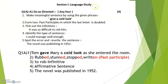As you can see here, section 1 language study. The first set of questions is any 4, and each carries 1 mark. There are 5 questions so you need to do any 4. First is: make a meaningful sentence using the given phrase 'give a cold look.' Whenever you get any phrase, first try to understand what it means. 'Give a cold look' means when you give an unfriendly look to a person. The answer is: Tom gave Mary a cold look as she entered the room.